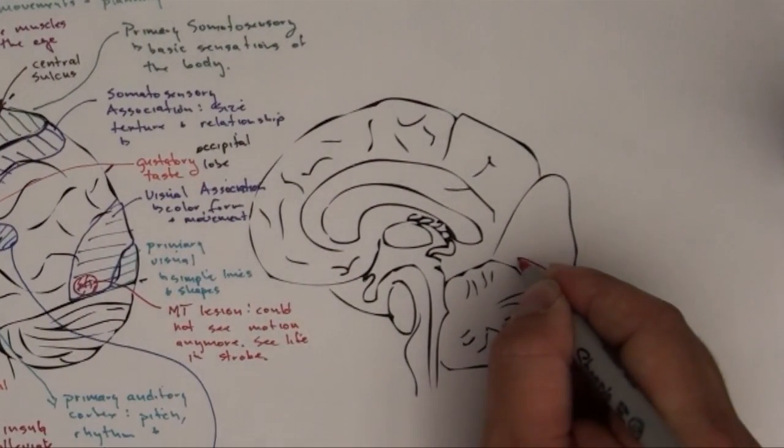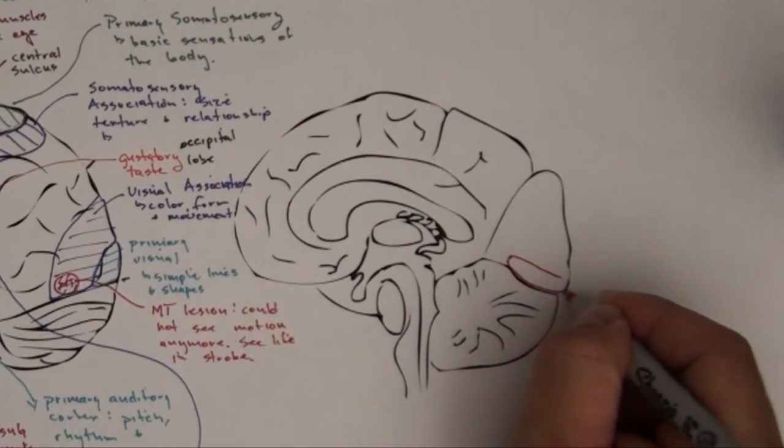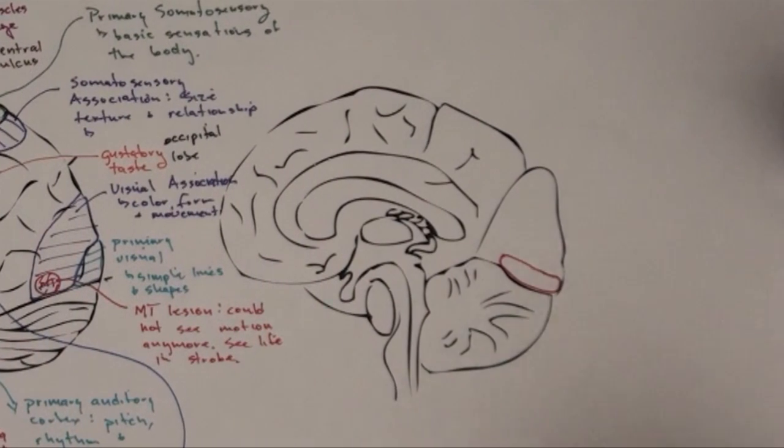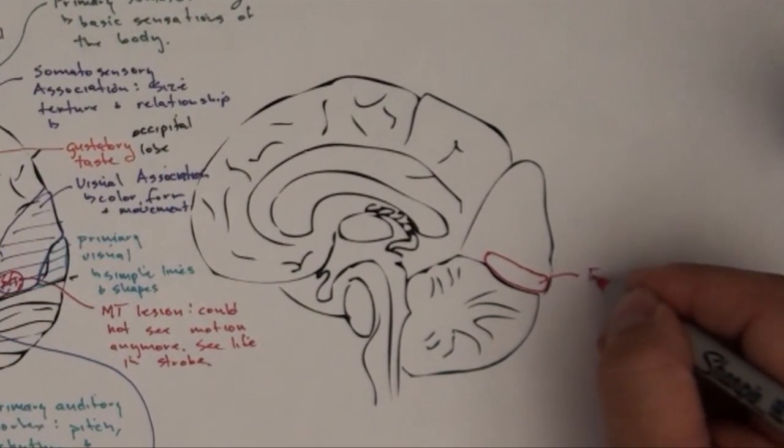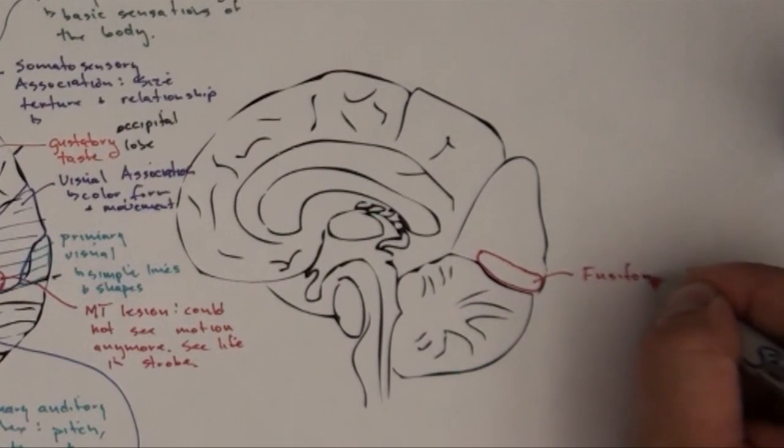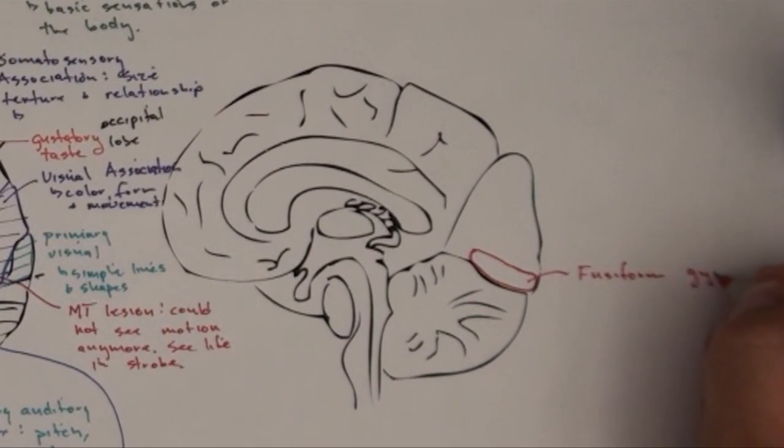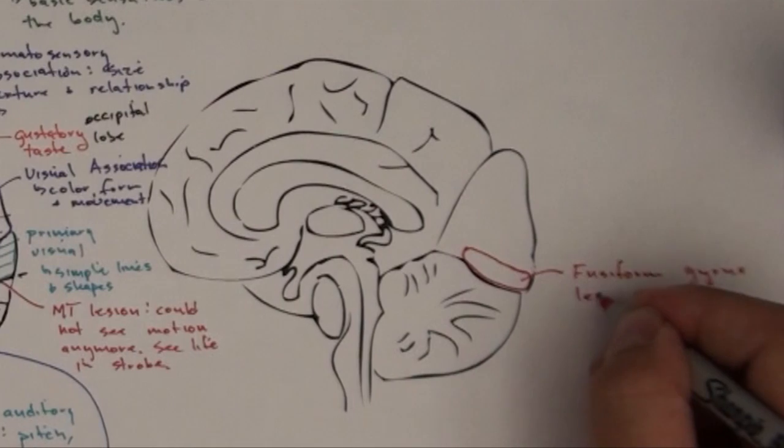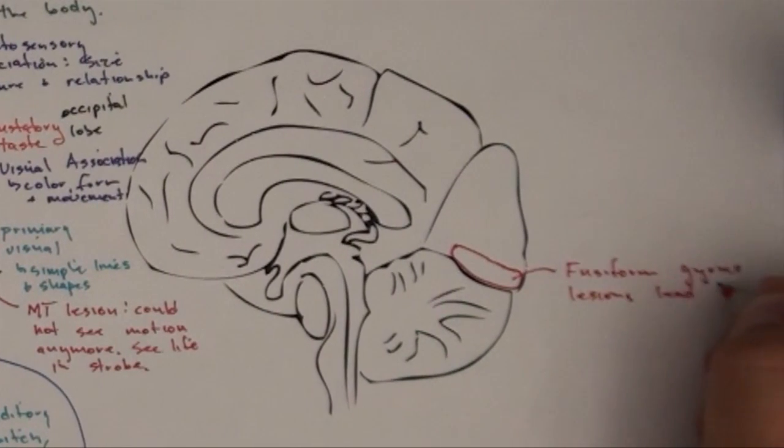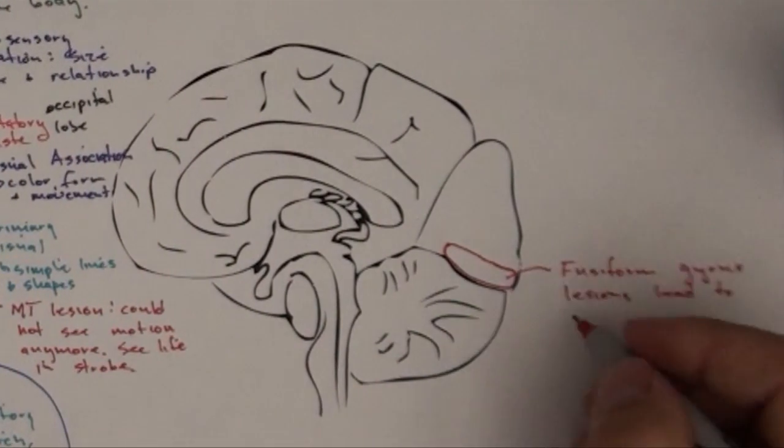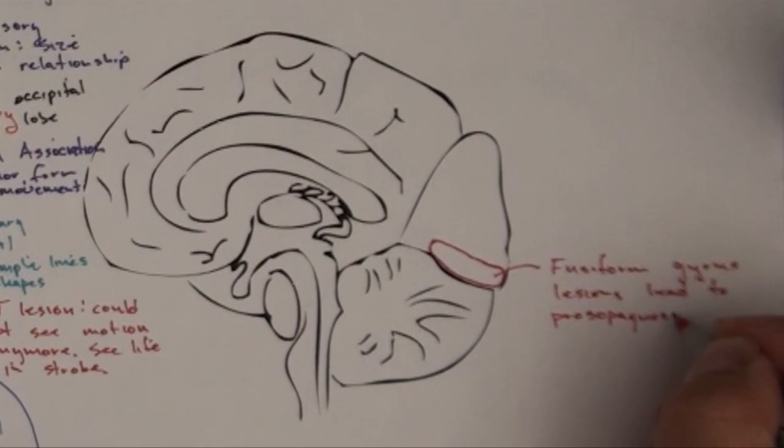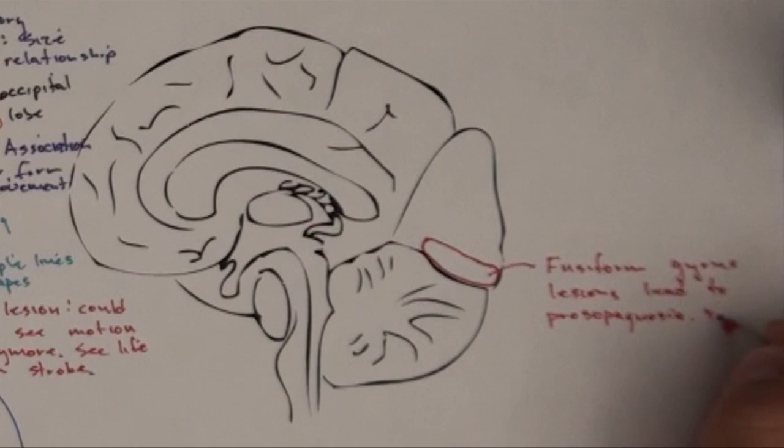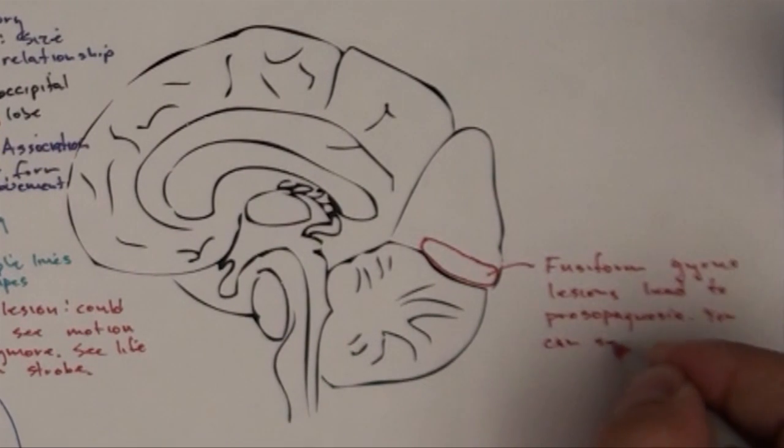There's another one I'm going to jump over to this side because it's a little bit easier to put this one on the inside. But this is something called the fusiform gyrus. Fusiform gyrus lesions lead to prosopagnosia. You can see, but you can't recognize faces.